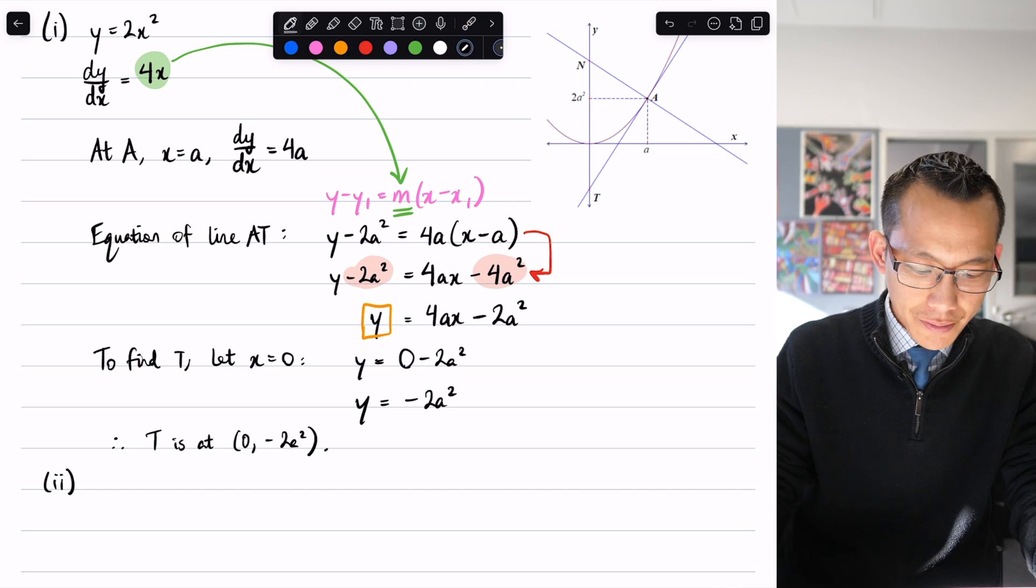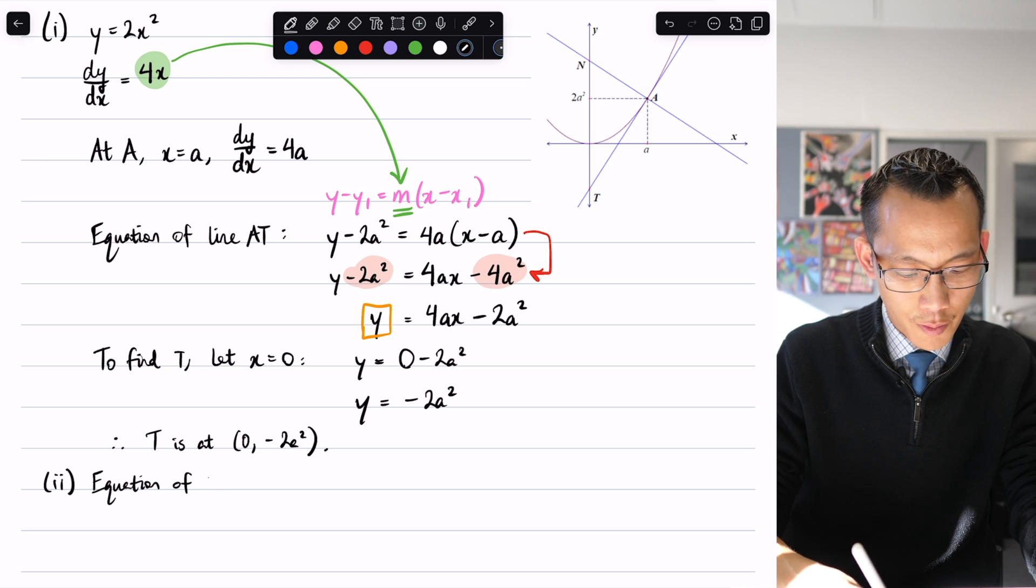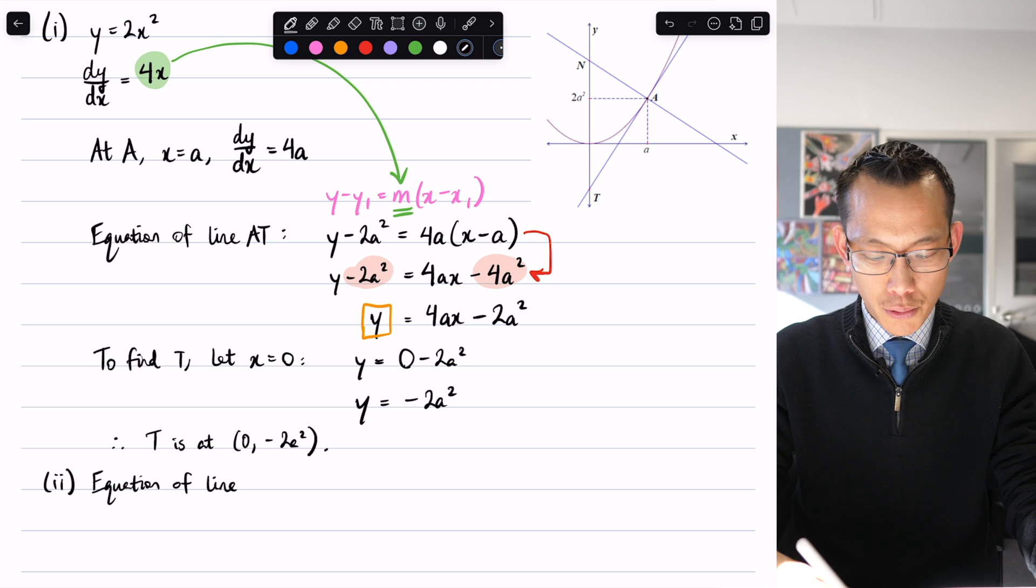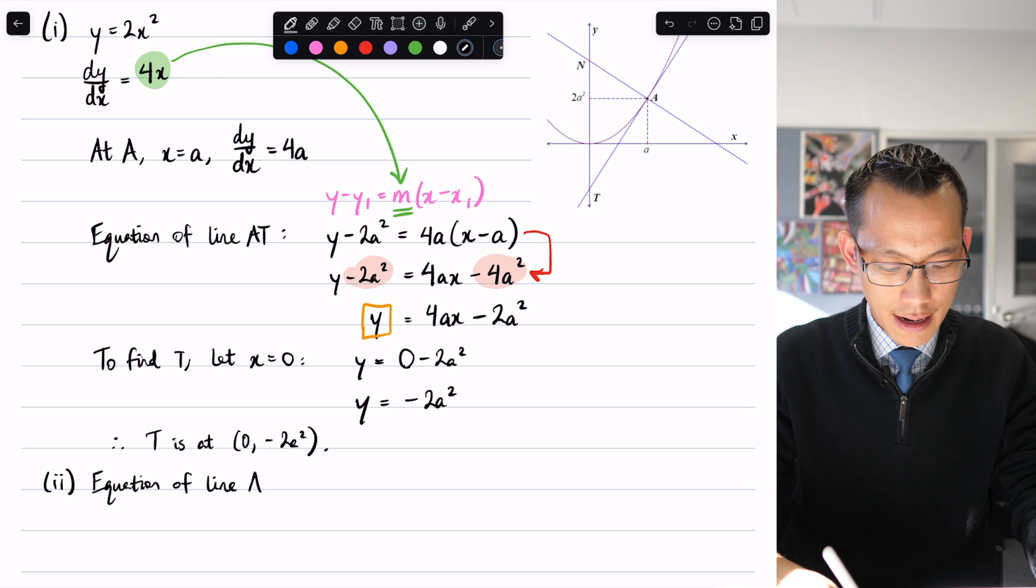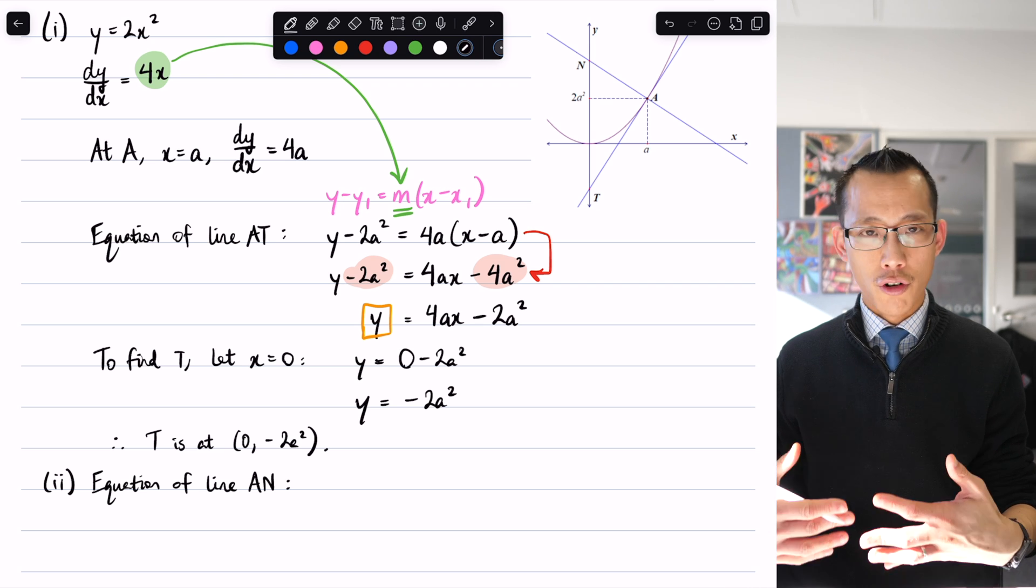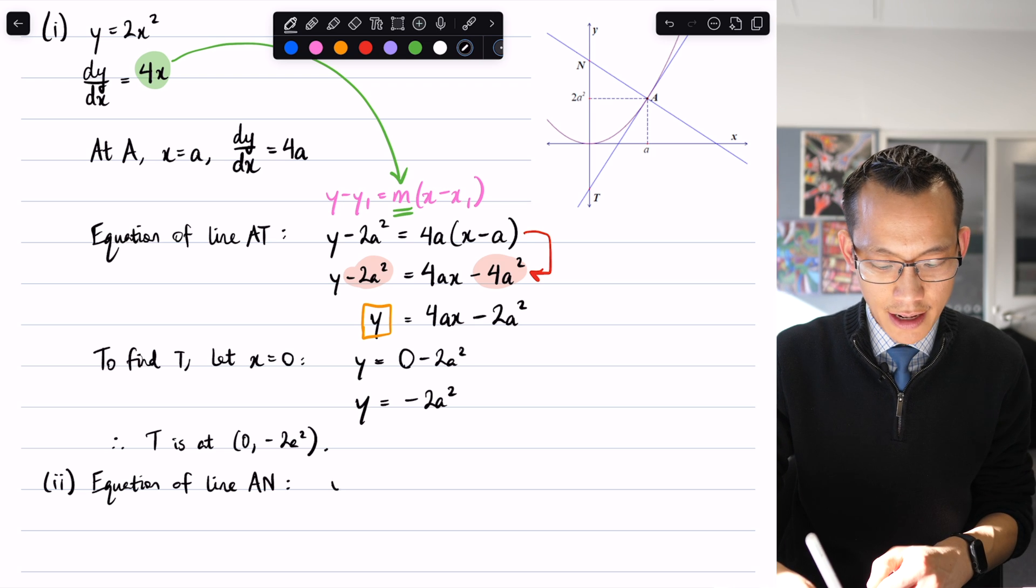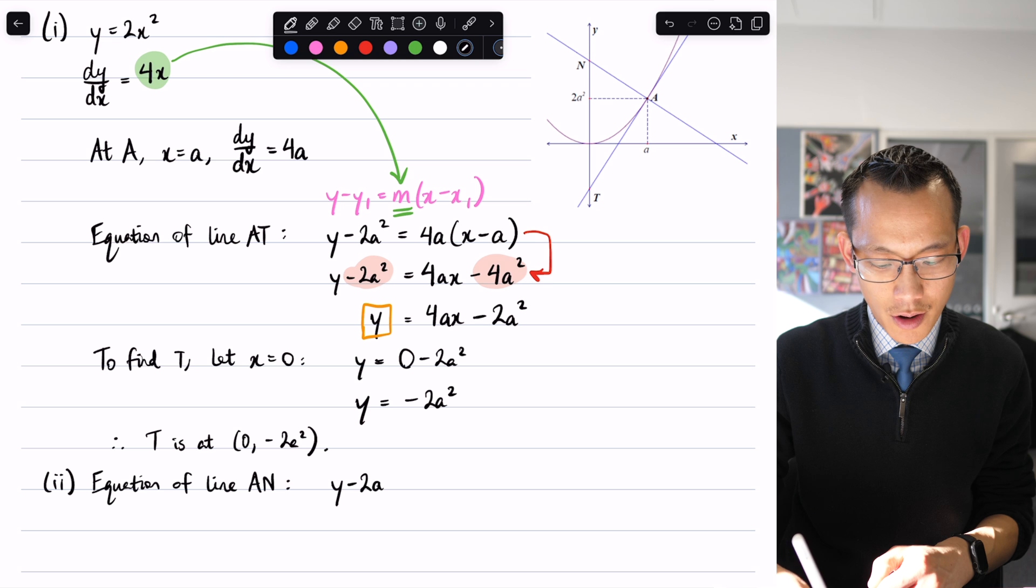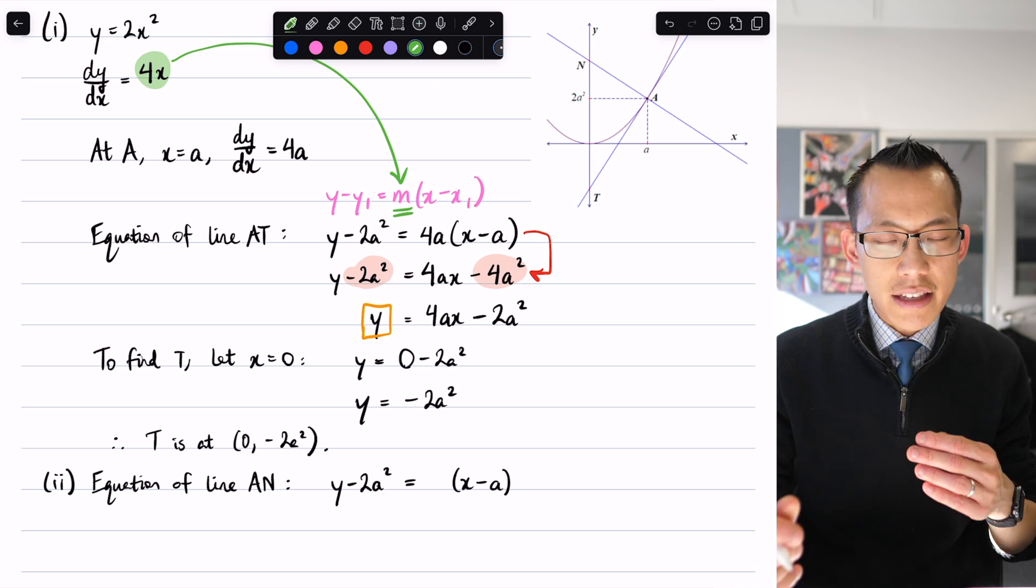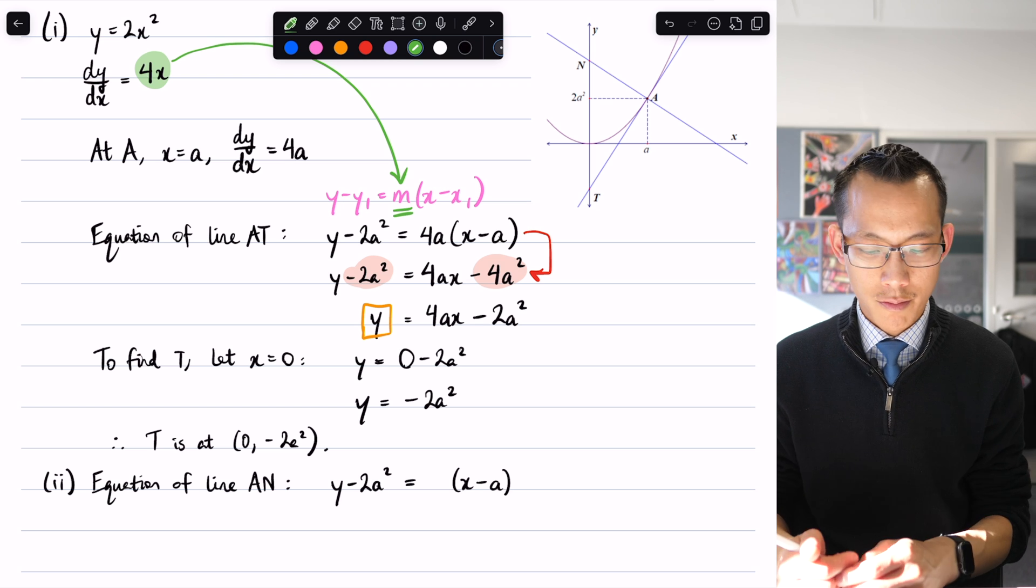Remember how we were saying before the normal is perpendicular to the tangent line. So therefore I can say the equation of line AN, when I go and do point-gradient form, all the things I said before about the point will remain the same. So I'm going to write y minus 2a squared, I've got the x minus a over here, and the only thing that's different is the gradient of this line, the normal.